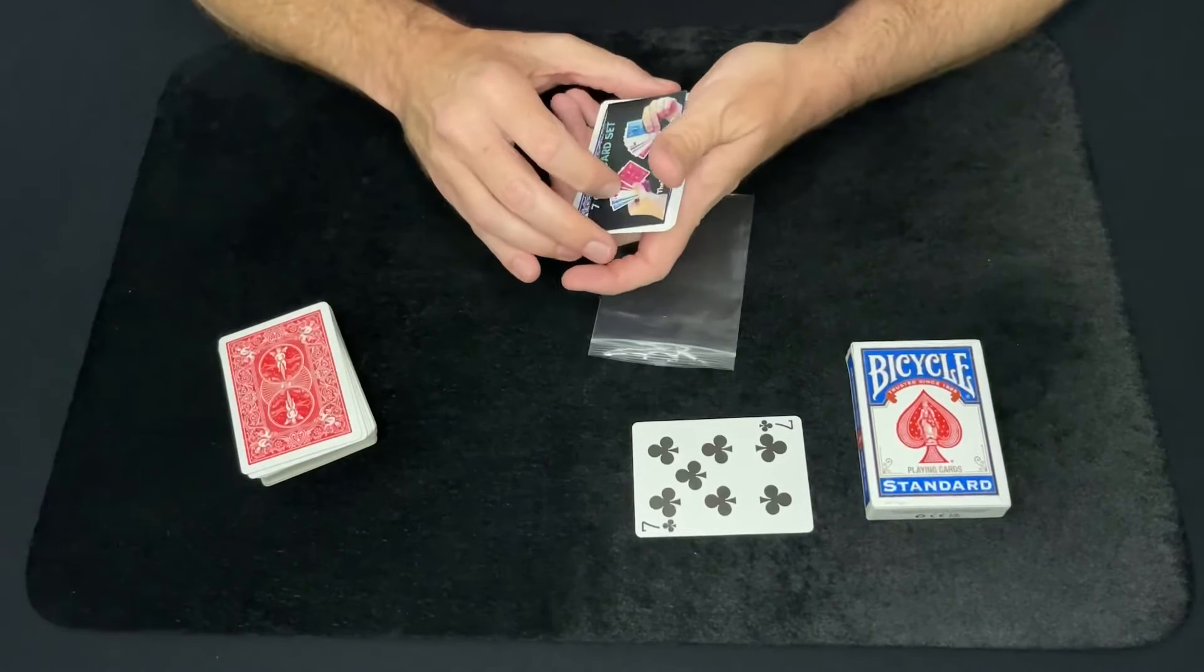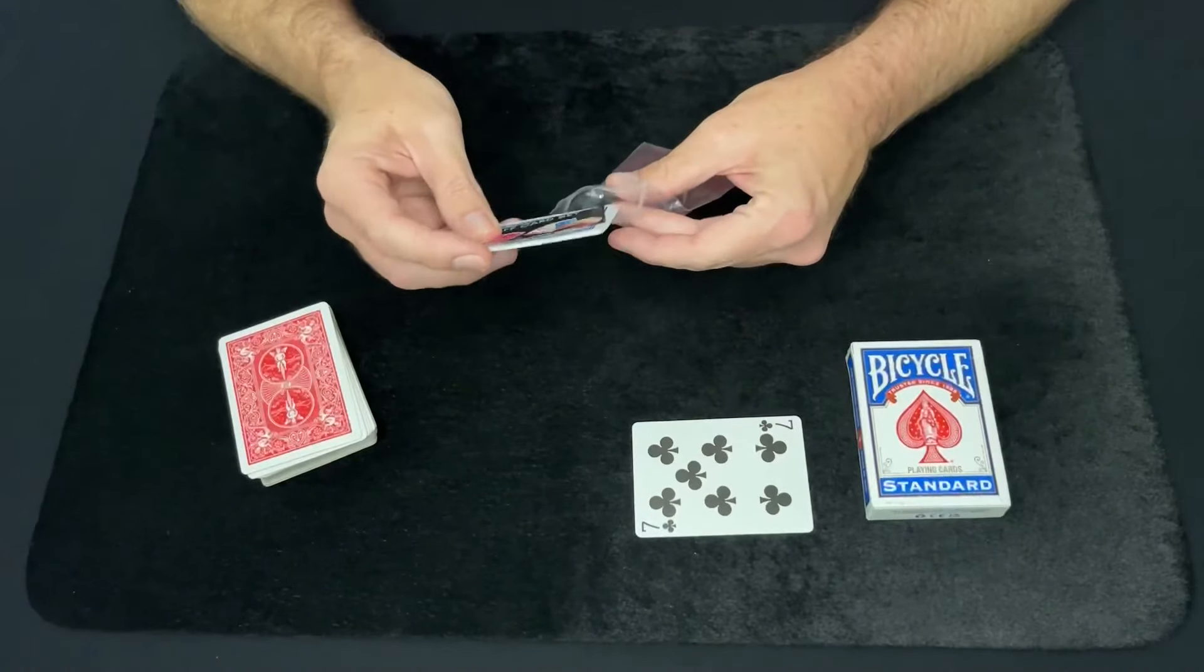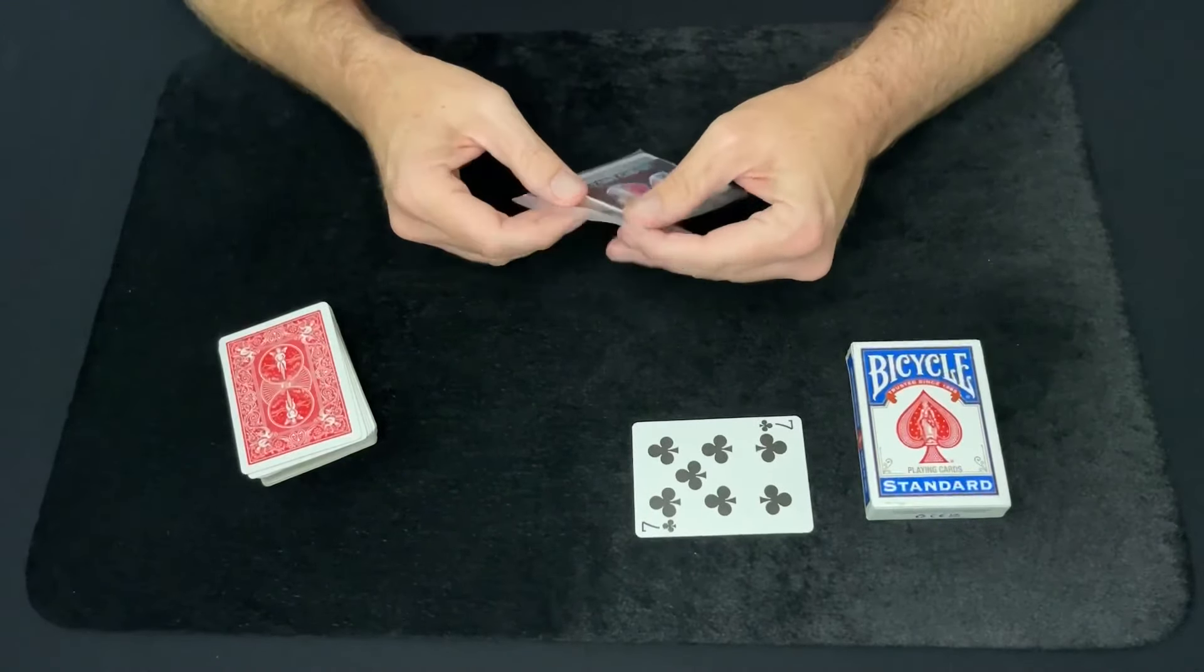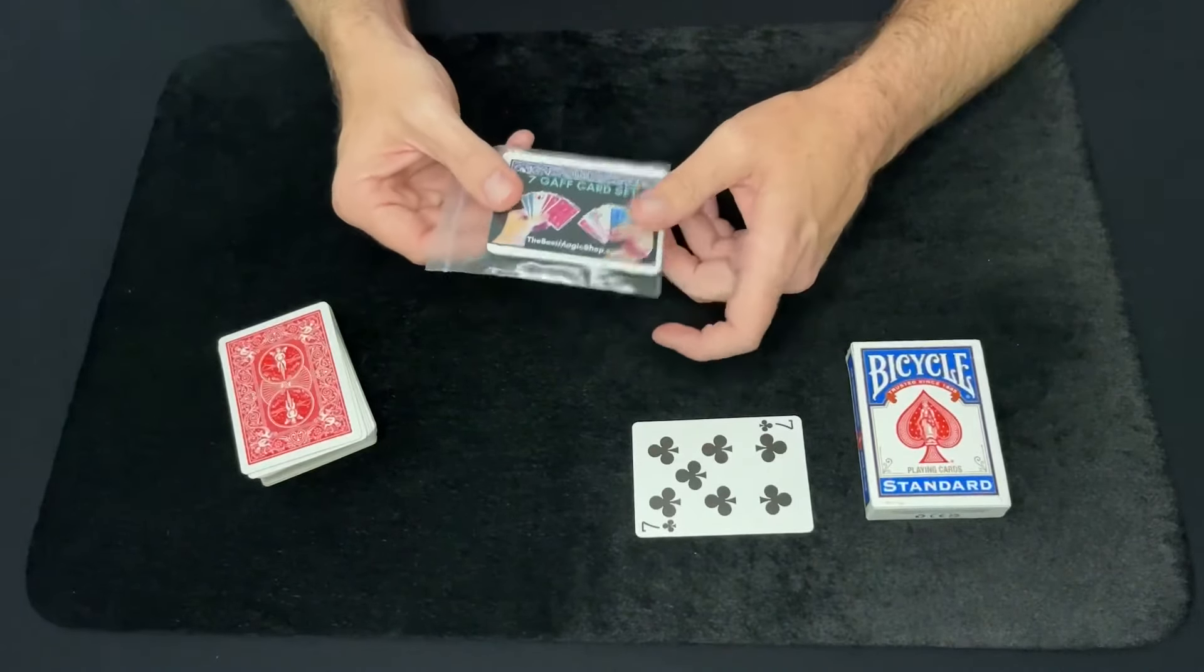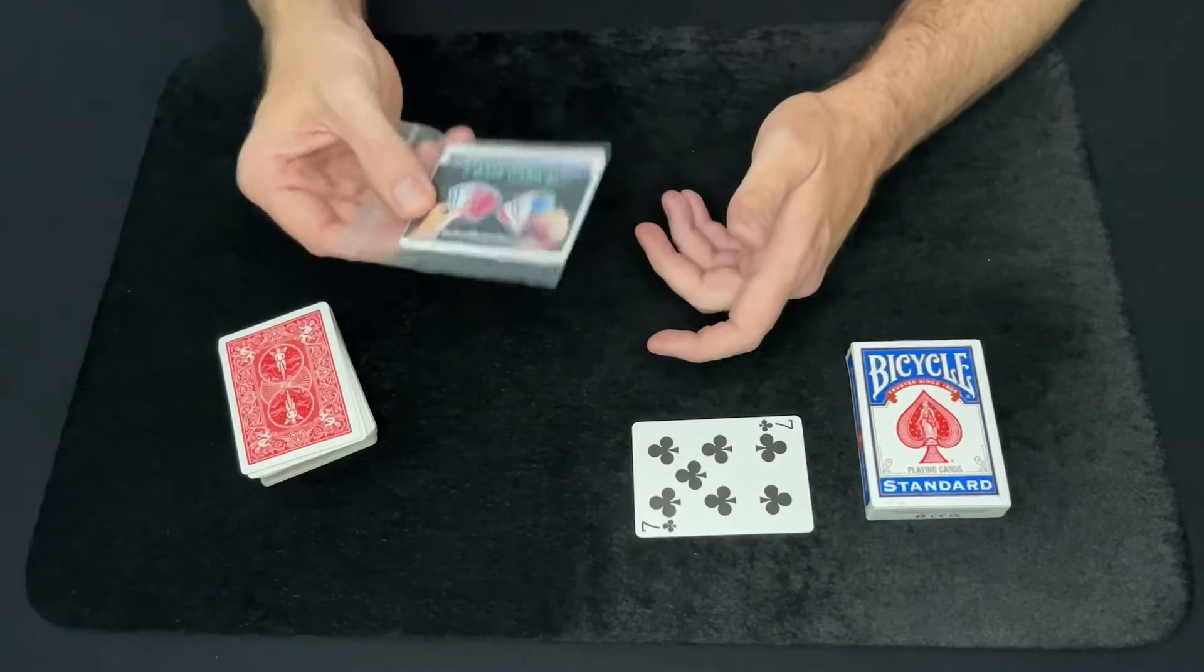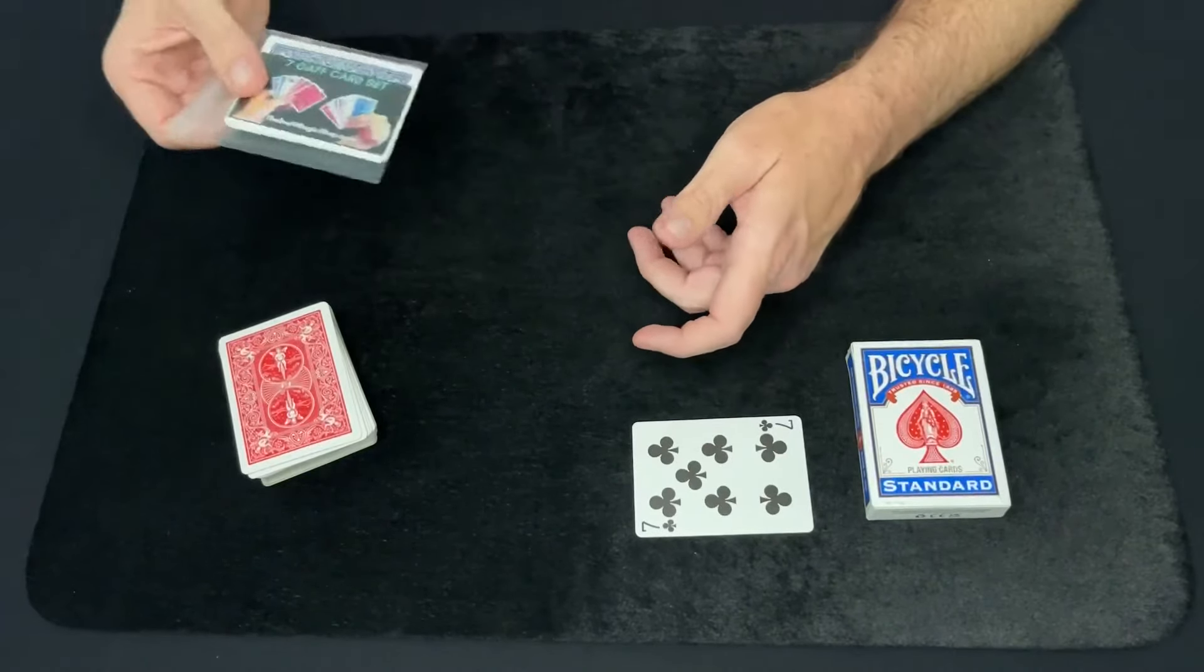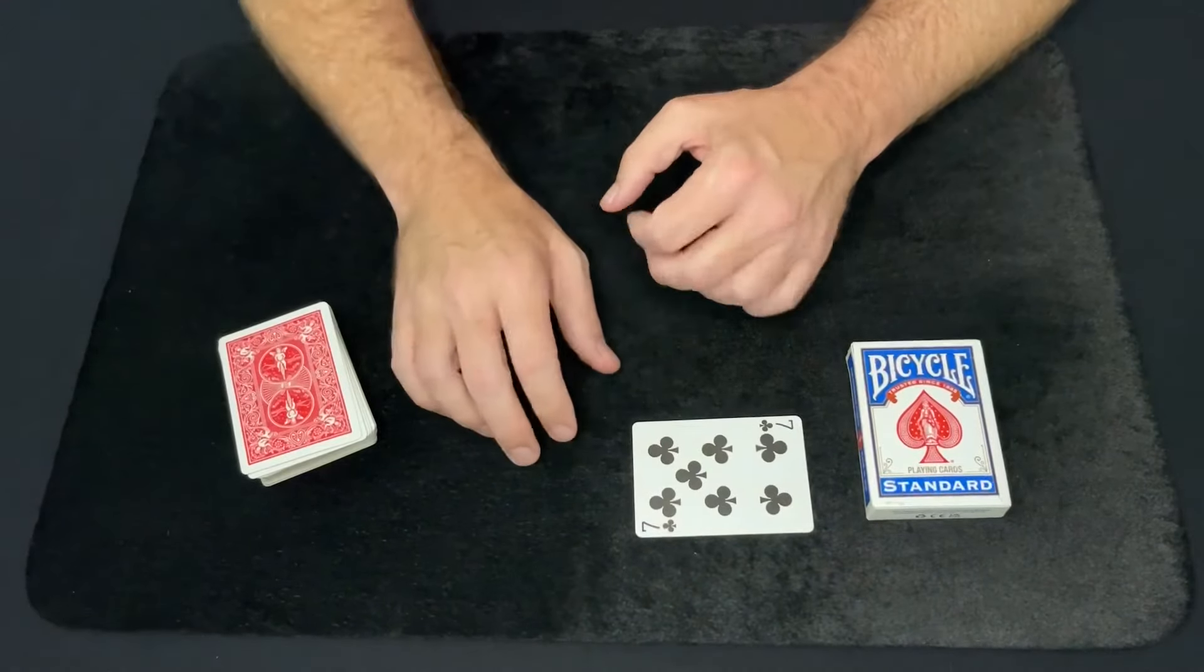But you can get these from thebestmagicshop.com. They're a few dollars, plus there's a cheap shipping option available for these, too. It's just the cost of a postage stamp, so it's cheaper to get these there. If you don't have a magic shop around you or whatever. And you get a whole bunch of gaff cards, pretty much every gaff card you need for a lot of tricks. So you can get those there.